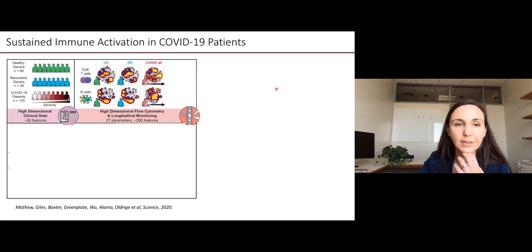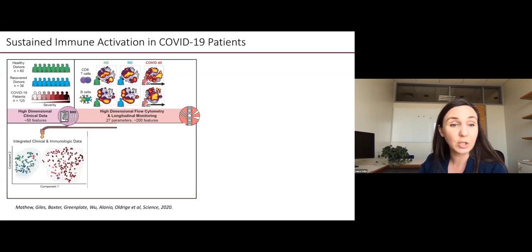Before we talk about children, I first want to tell you what we learned about adults so you can understand the comparison. We collected healthy donors, recovered donors, and patients with COVID-19 who had varying degrees or increasing severity of illness. If you look on a per cell basis, this is mapped single cell data from flow, healthy donors and recovered donors looked fairly similar in CD8 T cells and B cells, whereas patients admitted with COVID-19 occupied a different portion of that map.